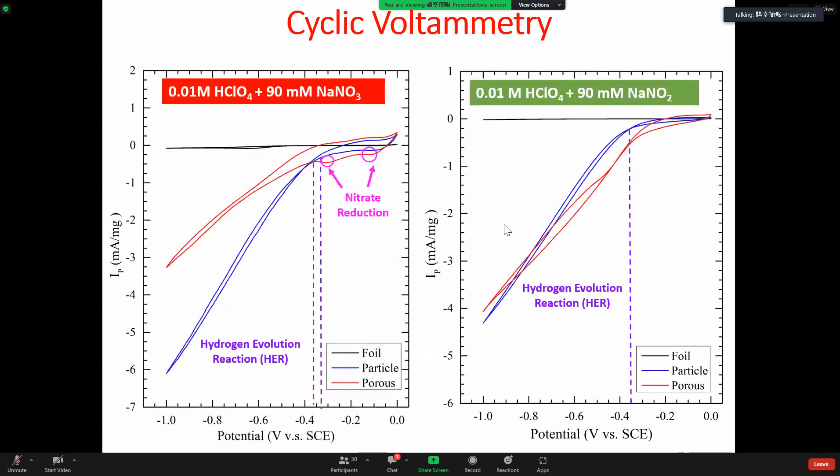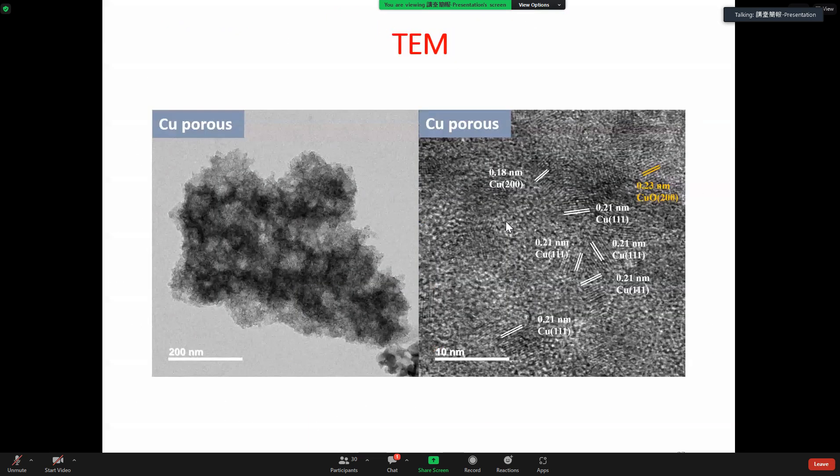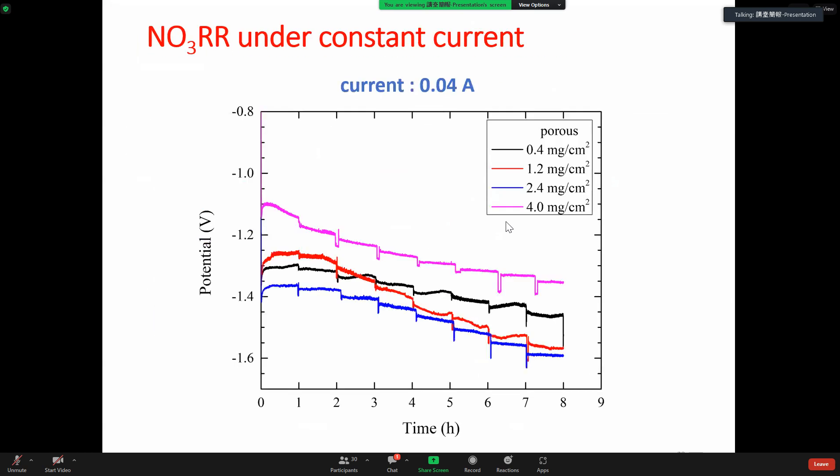So your porous catalyst seems to have smaller charge transfer resistance but higher solution resistance. I was just wondering why. If you have smaller resistance for electron transfer, that means you will generate a larger current, so you can have a stronger ability to reduce and generate ammonia. Okay, we can talk about it more. Let's talk about it. Okay, okay.